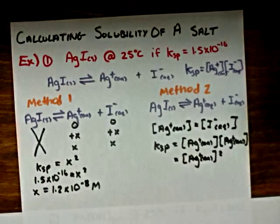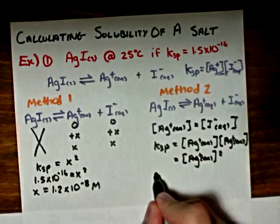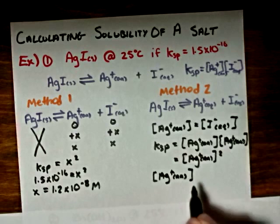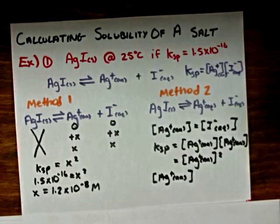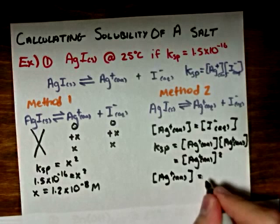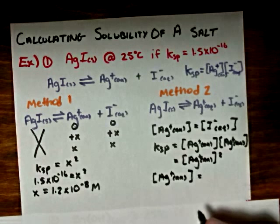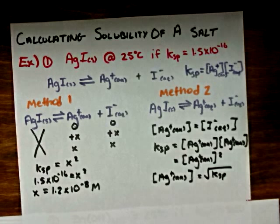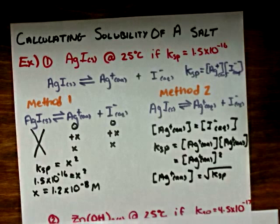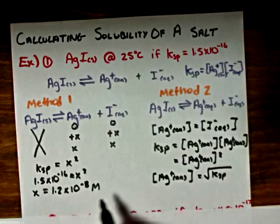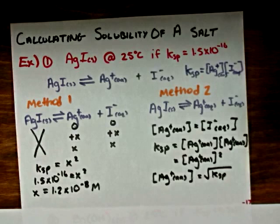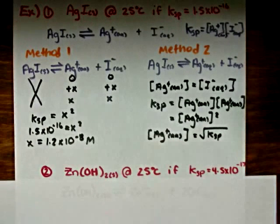Therefore, the Ksp is just equal to the concentration of the silver ions squared. If you solve for this, you get that the concentration of the silver ions is equal to the square root of the Ksp value, which gives us the same answer as we determined using the other method. Now let's look at another example.